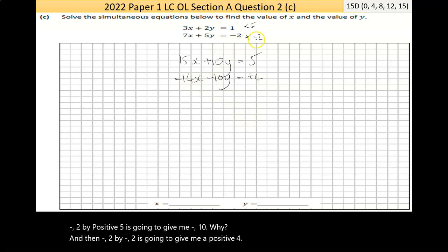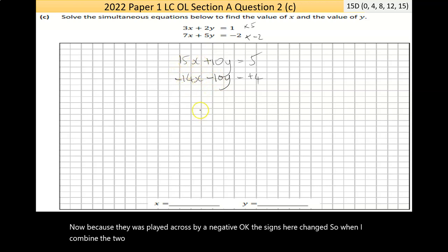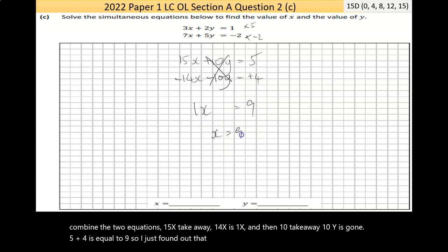Now, because I multiplied across by a negative, the signs here changed. So when I combine the two equations, 15x take away 14x is 1x, and then 10y take away 10y is gone. 5 plus 4 is equal to 9. So I just found out that x is equal to 9.